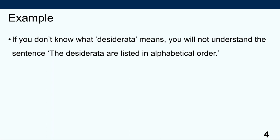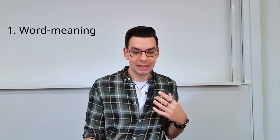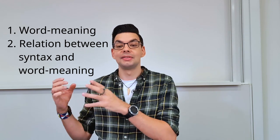As an example of the need to know what words mean: if you don't know the word 'desiderata', you will struggle to understand 'The desiderata are listed in alphabetical order.' As an example of where structure really matters: if you don't know about that, you can't tell the difference between 'John saw Mary' and 'Mary saw John.' To know who is doing what to whom, you have to know that the subject in an active clause in English refers to the agent, whilst the object position is taken by the patient, the undergoer of the action.